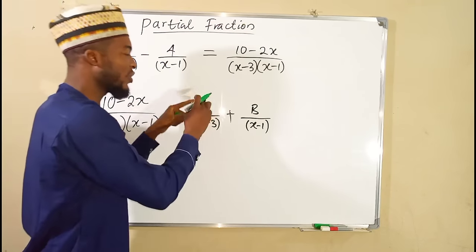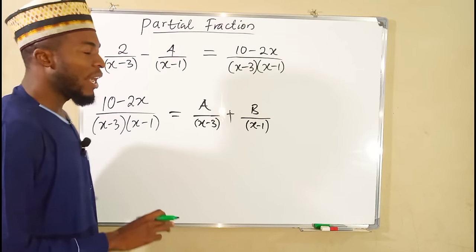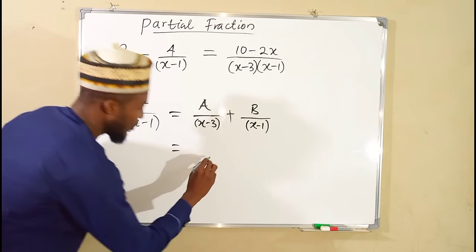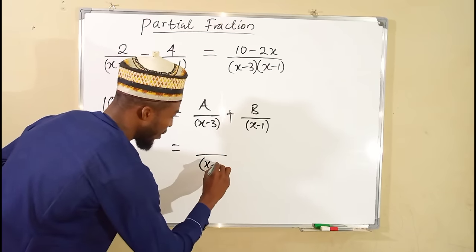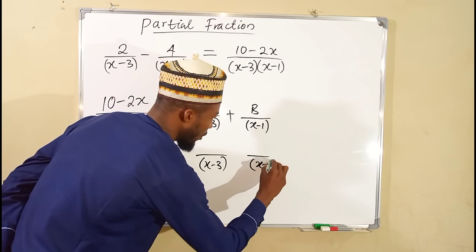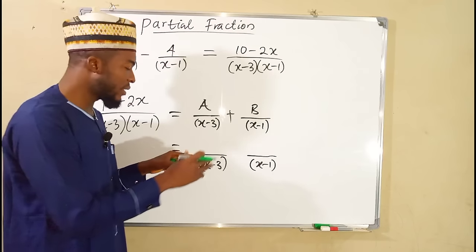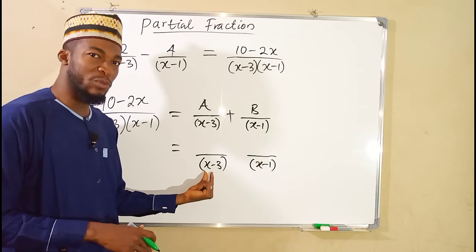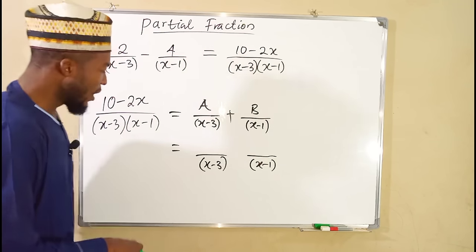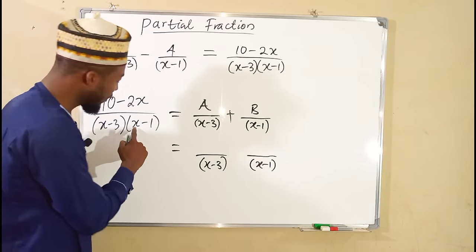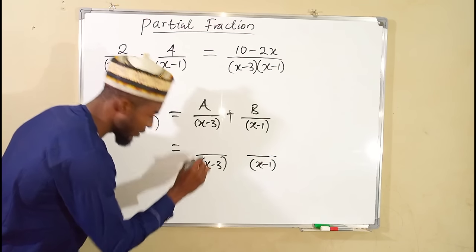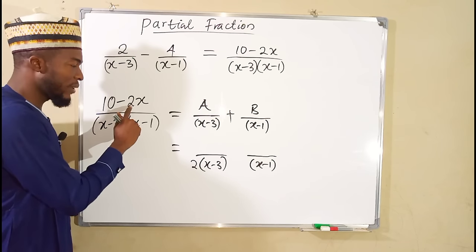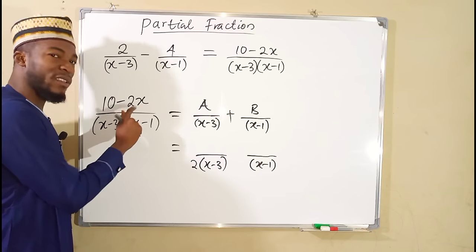We are going to find the corresponding constants A and B, and the first method I'm going to introduce is the cover-up method. For the first fraction with denominator x minus 3, we set x minus 3 equal to 0 by letting x equal 3. We then substitute x equals 3 into the other factor: 3 minus 1 is 2, giving us 2 on the bottom. For the top, we substitute x equals 3 into the numerator: 2 times 3 is 6, and 10 minus 6 is 4. So we have 4 over 2.